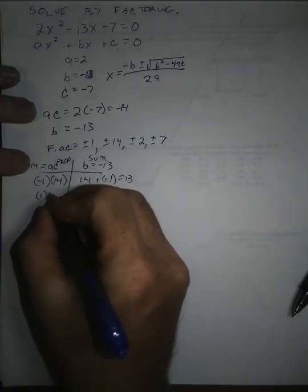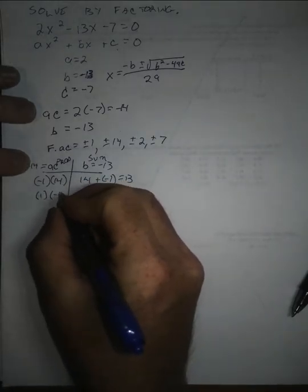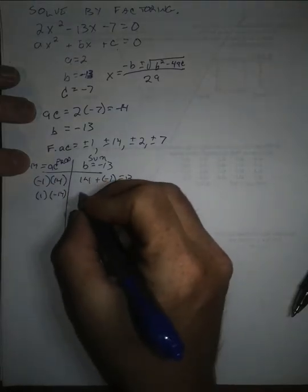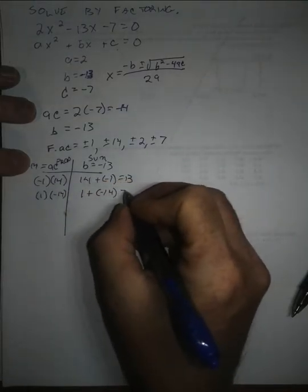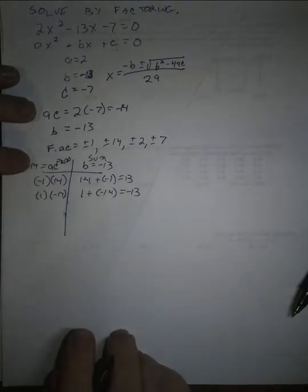by instead choosing 1 times negative 14. And in that case, I have 1 plus negative 14, which is negative 13, which is what I'm looking for.